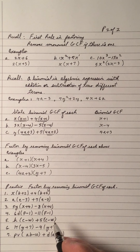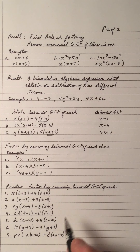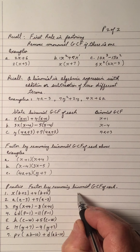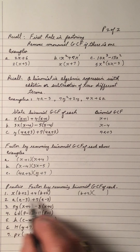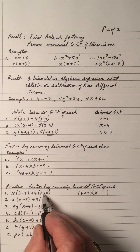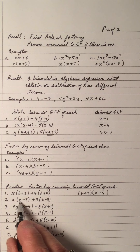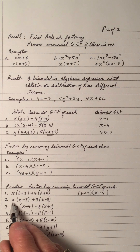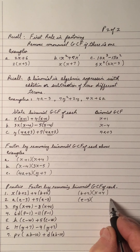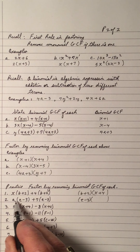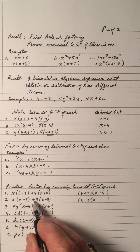The binomial GCF in number 1 is b plus 2. Taking out b plus 2, the first expression gives x and the second gives plus 4. For number 2, the common binomial GCF is e minus 3. Dividing the first expression by e minus 3 gives a, and dividing the second by e minus 3 gives plus 7.